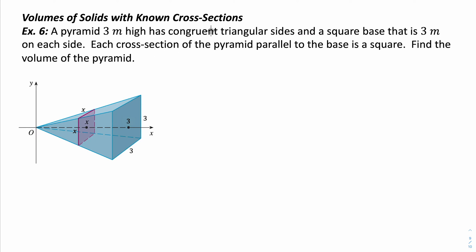In this video, we're going to be taking a look at finding the volume of solids that have cross sections that are not circles. So in the disk method and washer method, both of those methods involved circles or circles with another circle cut out. What we're going to have now is some region in our xy plane with cross sections that are known shapes, but they will not be circles.